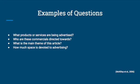Some example questions are: What products or services are being advertised? Who are these commercials directed towards — an older or senior crowd, or is it directed more towards children? What is the main theme or main idea of an article? And how much space is devoted to advertising — for example, how much of a magazine or program is used for a certain type of advertising to influence the audience?